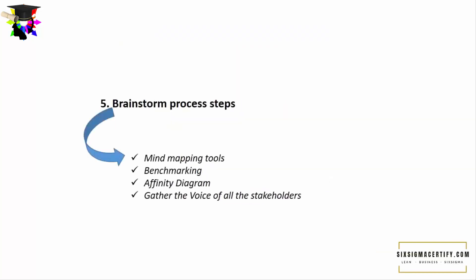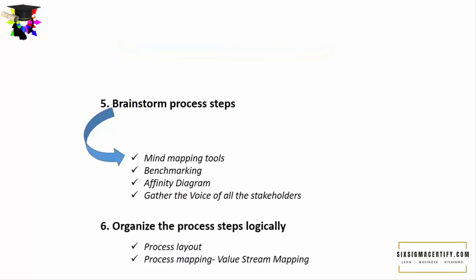The fifth stage is brainstorming the process steps. There are different ways of brainstorming — we can use software and mind-mapping tools. We can also benchmark, which means studying successful products and services and incorporating the values that made those products or services successful in the market. Benchmarking doesn't mean copying. Another brainstorming technique is drawing the affinity diagram — affinity means the degree of closeness or relationship. We can also gather the voice of all stakeholders in the brainstorming session. The sixth step is to organize the process steps logically. We can review the process layout and study if there is any defect or flaw. If there is a flaw in the process layout, it will affect the output and customer satisfaction as well.